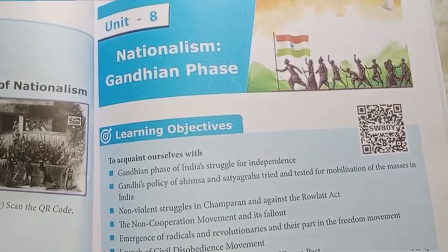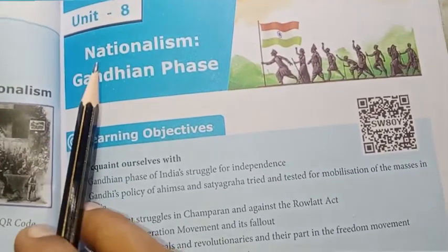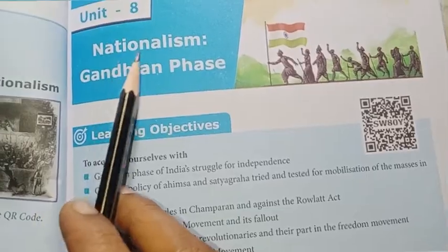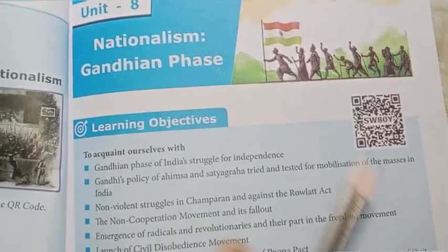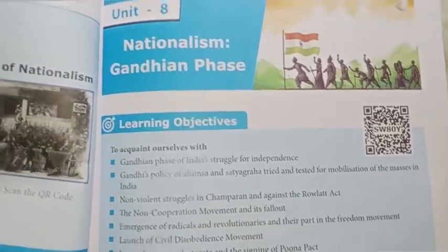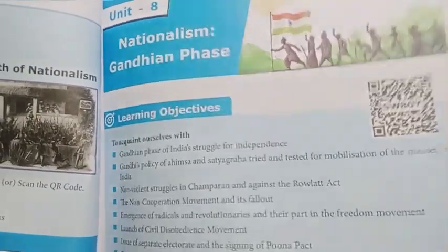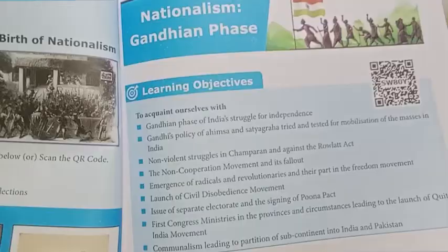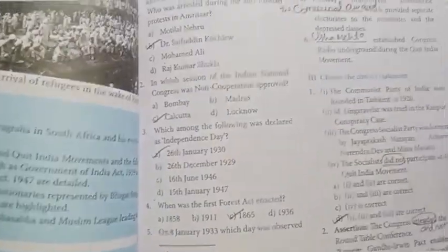10th standard social science unit history, nationalism, Gandhian phase — lessons 8, 9, 10, 11. You will see the book back page 103.